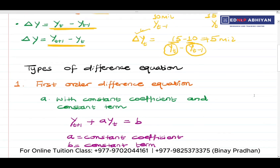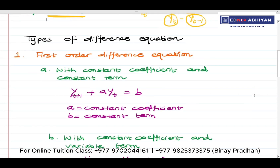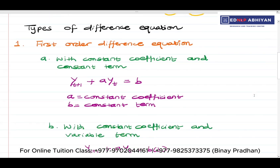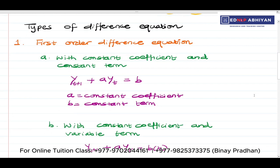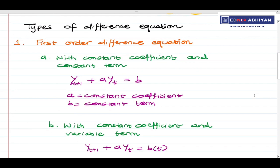Our difference equation is usually first order or second order. A first order difference equation involves time t and t plus 1 — that is, a one unit time gap.